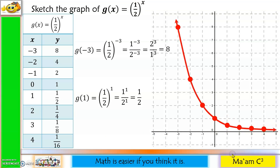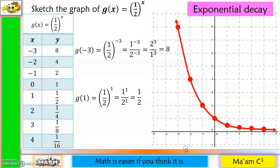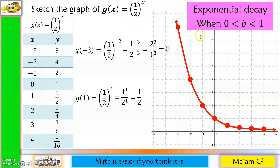Connecting the points, notice that as x increases by 1 unit, y is divided by 2 each time — from 8 to 4, 4 to 2, 2 to 1. The curve moves steeply downward going to the right, but it will not touch the x-axis. This is called exponential decay, which occurs when the base is greater than 0 but less than 1. It is a decreasing function.